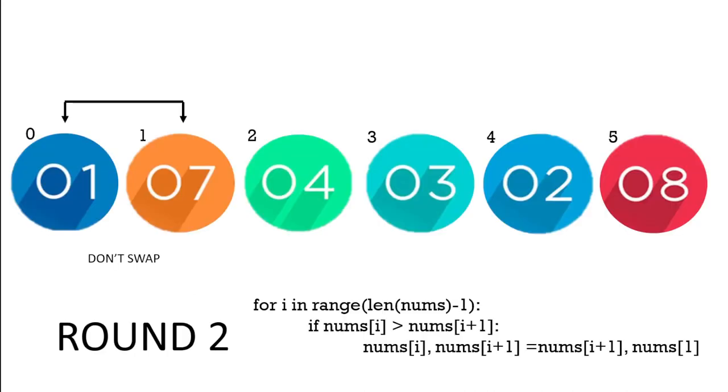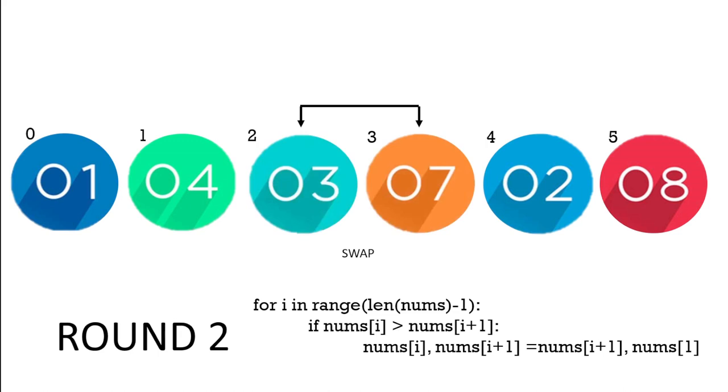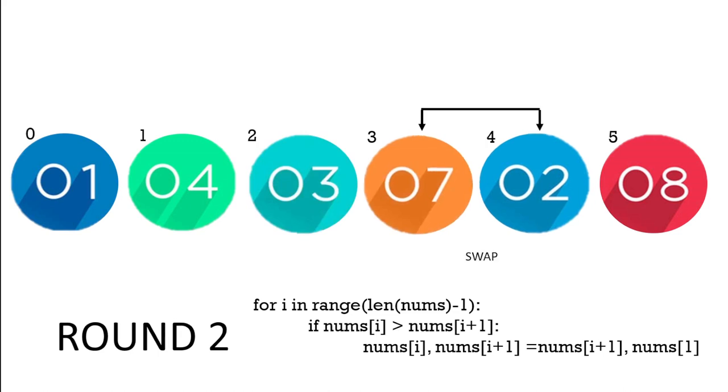So here we've got one and seven, so we don't need to swap them around. Seven and four, oh they're the wrong order, so we can swap them, four and seven. Seven and three, again swap, three and seven. Seven and two, again we need to swap them, so we now have two and seven. Seven and eight, we won't need to swap.